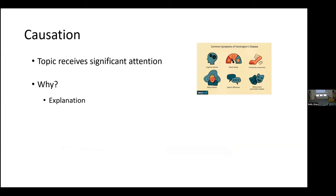Here's a simple example: Huntington's disease. If you want to give an explanation for Huntington's disease, this involves appealing to the cause or set of causes that produce it — at the very least a kind of trinucleotide repeat. The basic idea: causes or factors explain their effects. If you want to give an explanation of something, you need to know the causes that produce it. So if explanation is one of the most important things scientists do and it involves causality, you need to know something about causation.